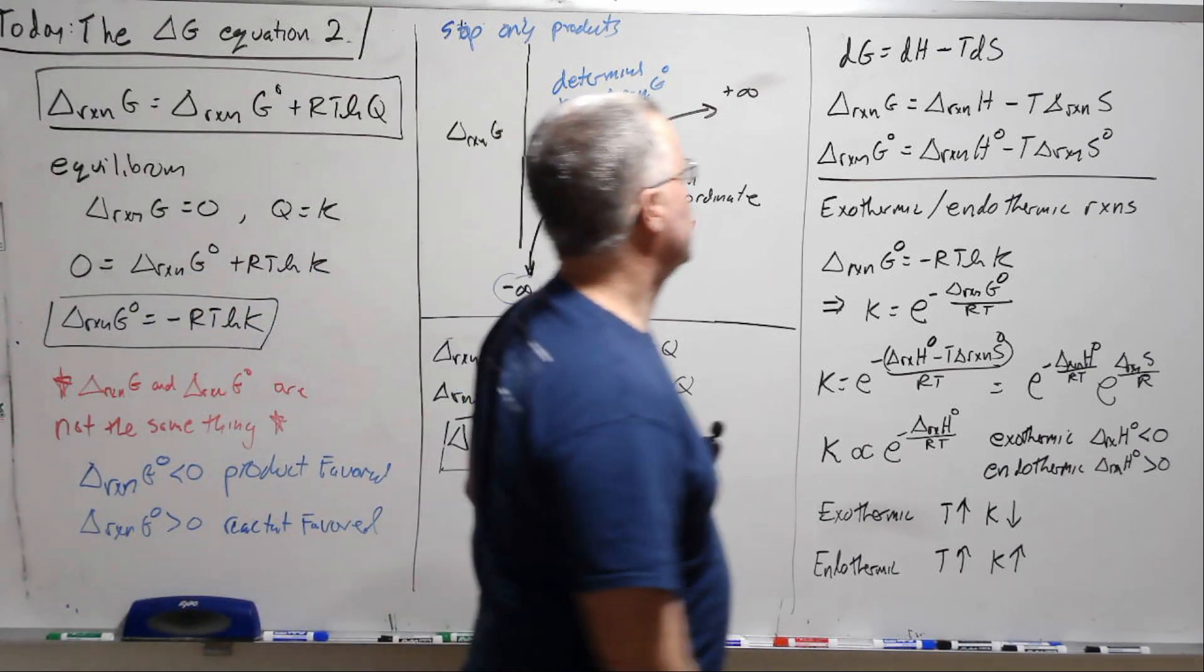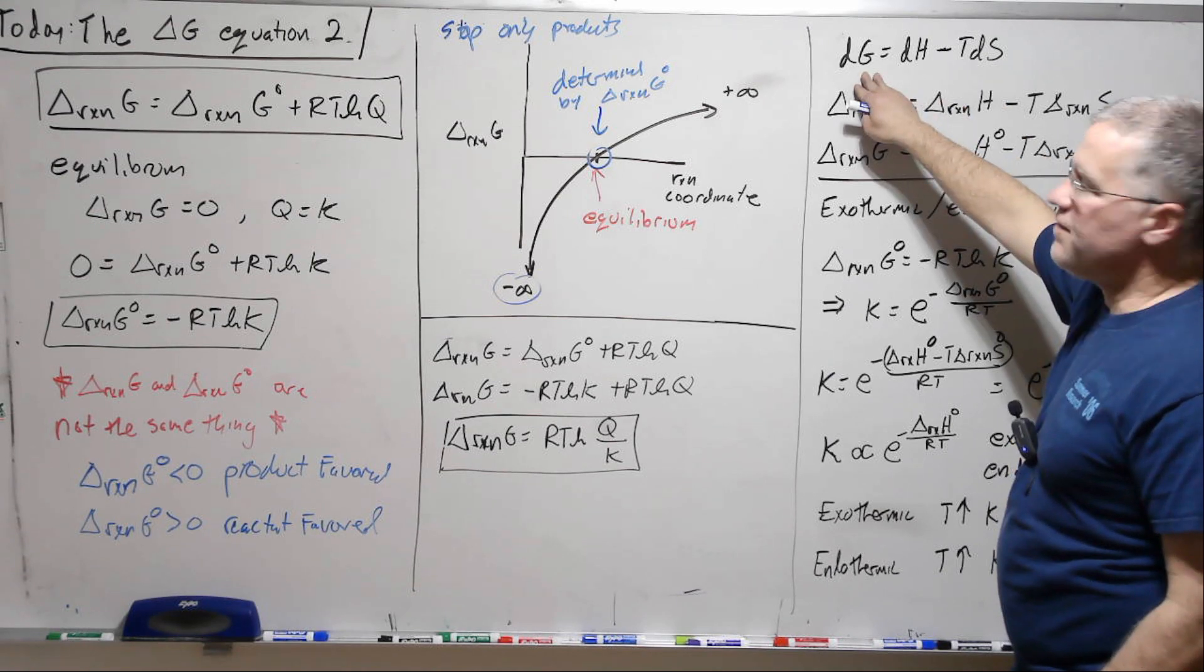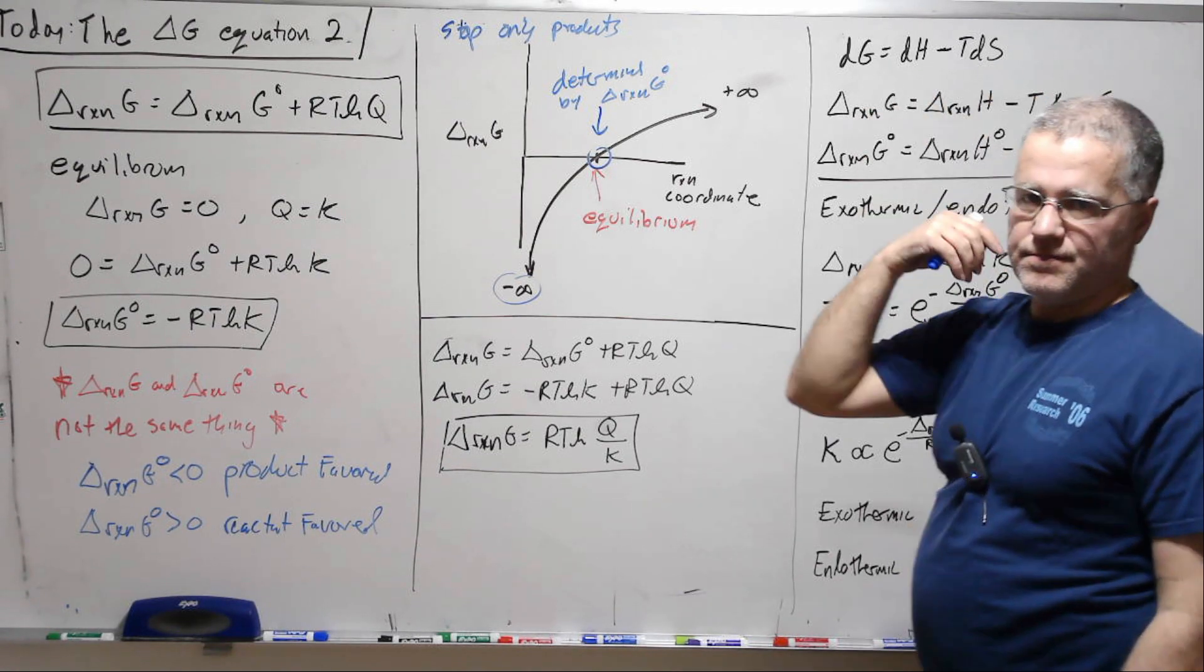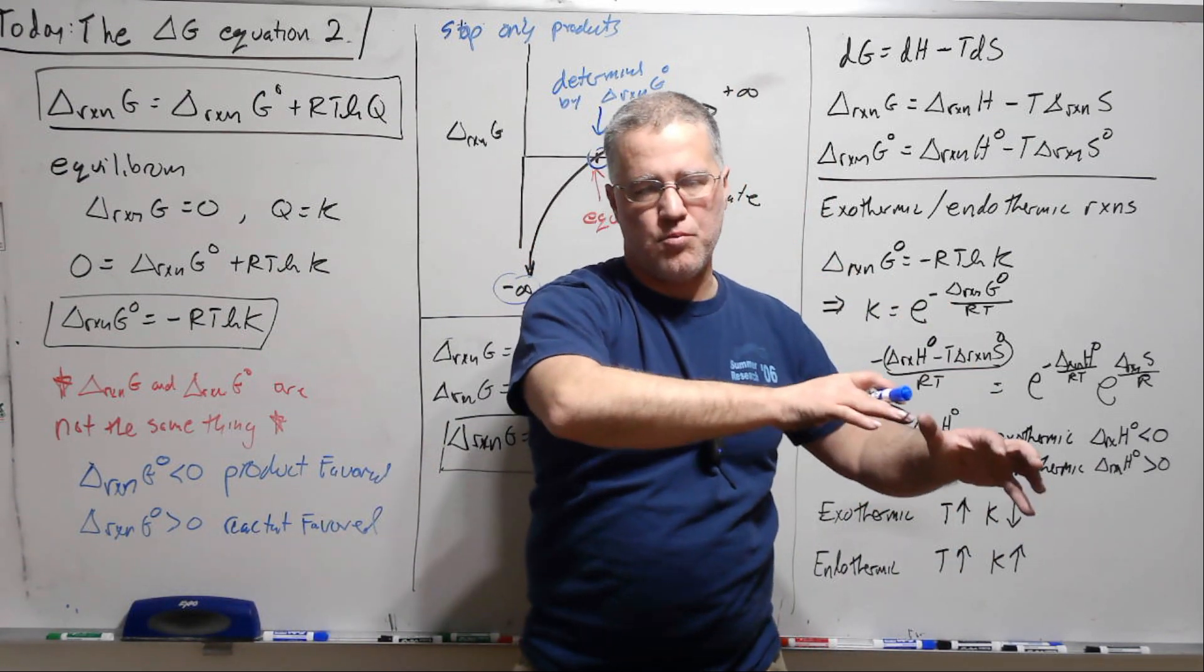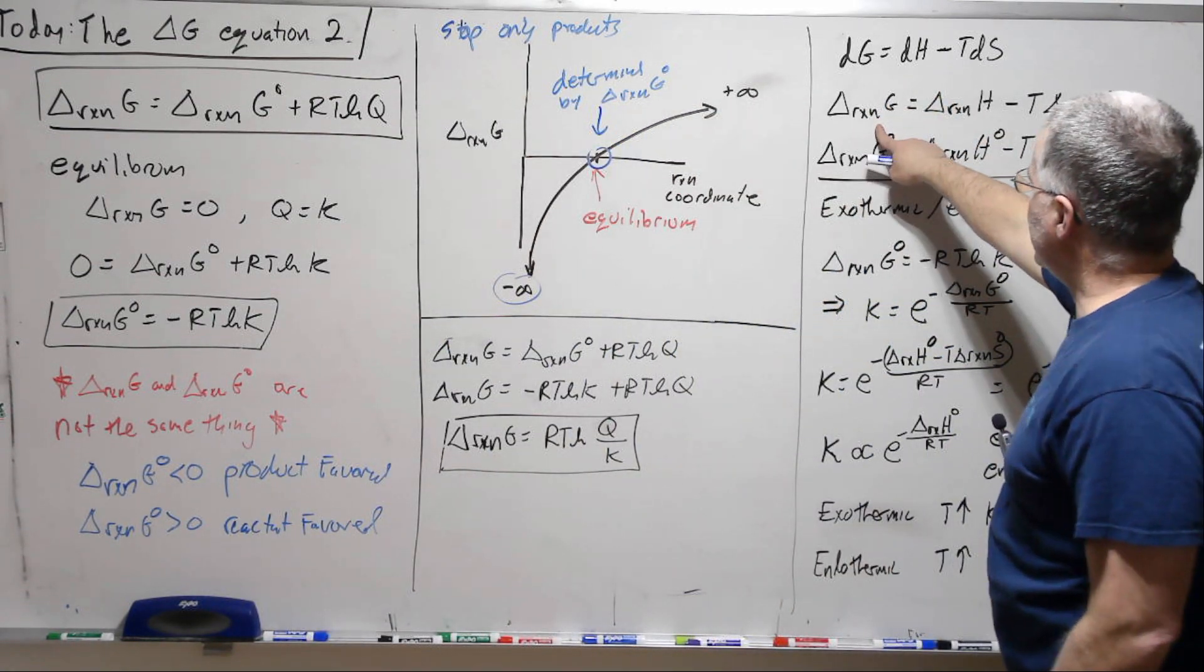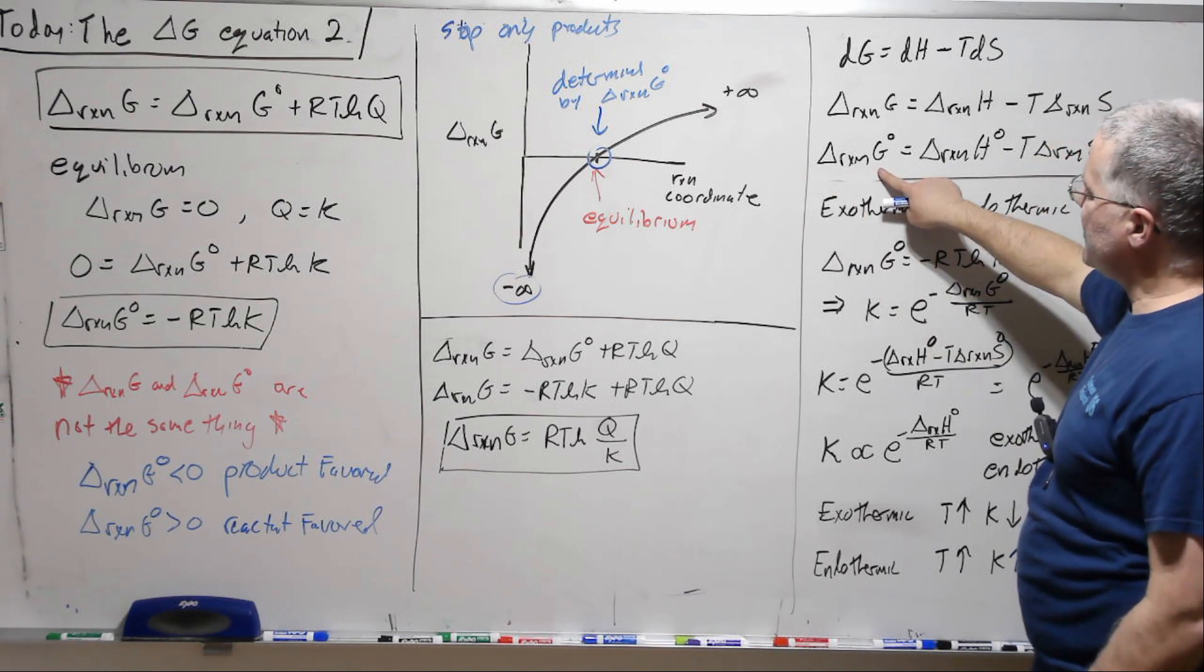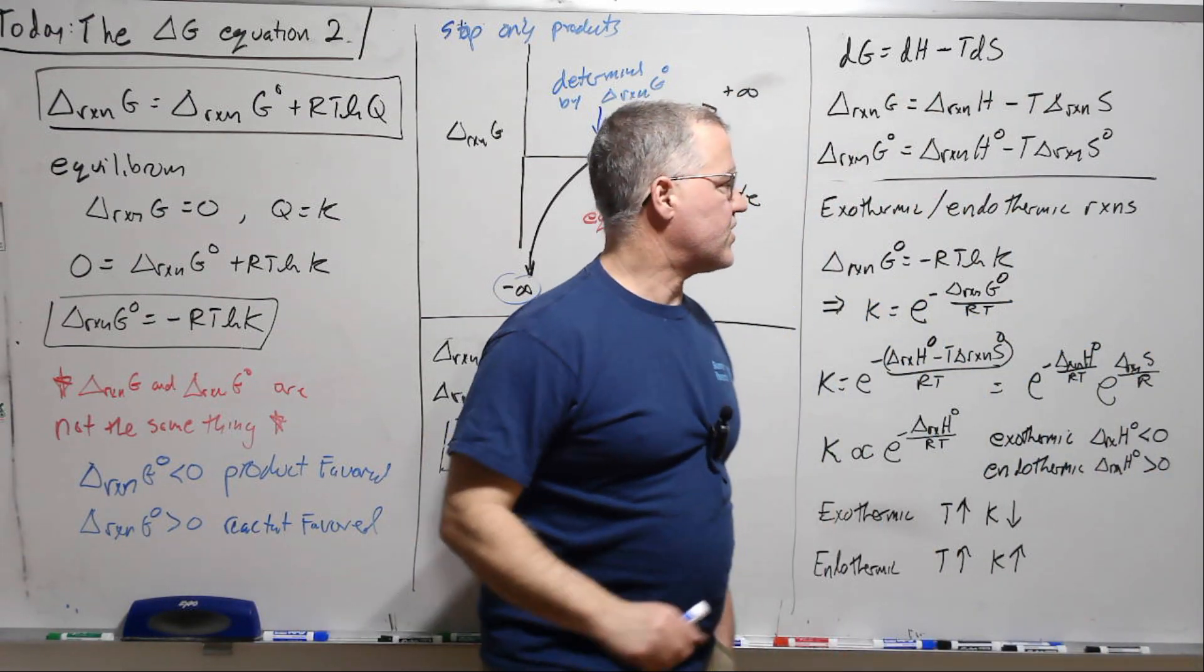All right, now let's bring in Delta G from before is Delta H minus T Delta S. So what that means for the reaction is if we take this up to the reaction level, now we're looking at the reactant state compared to the product state. So products minus reactants. That becomes a Delta reaction G, which is Delta reaction H minus T Delta reaction S. And if that's true, it's certainly true at standard conditions. So Delta G standard is Delta reaction H standard minus T Delta S reaction standard.